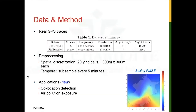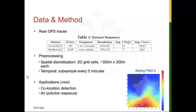Our empirical evaluation adopts two GPS trace datasets generated via diverse transportation modes to evaluate location privacy in practical scenarios. The GeoLife dataset includes data from participants in Beijing, while the Rio Buses dataset contains bus traces in Rio de Janeiro. We perform spatial and temporal discretization in each dataset. The two-dimensional geospace is partitioned into 300-meter by 300-meter grid cells, and for each user we subsample their GPS record every five minutes and generate one trajectory per day. The number of trajectories per user and unique locations visited vary greatly, as summarized in the table.